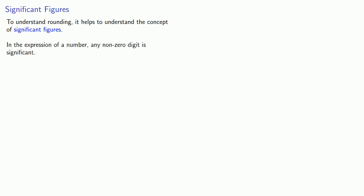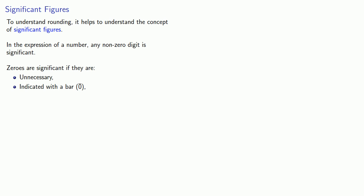First, in the expression of a number, any non-zero digit is significant. A zero might or might not be significant. Zeros will be significant if they are unnecessary, indicated with a bar over the top, or between significant figures.